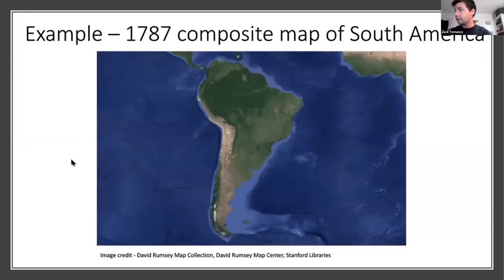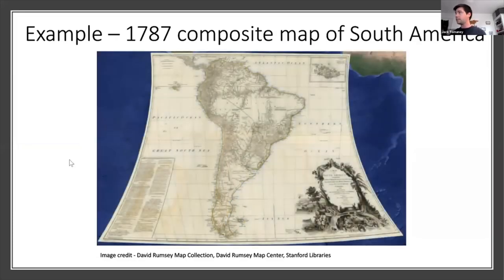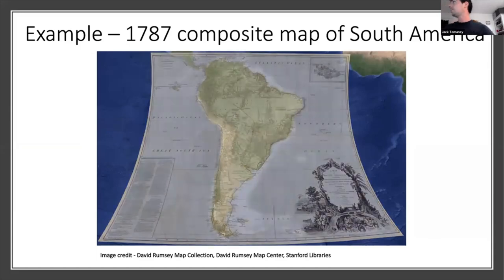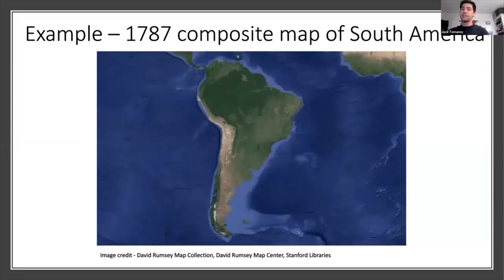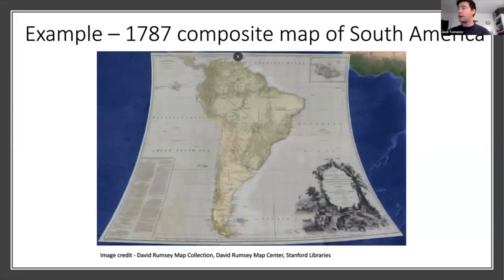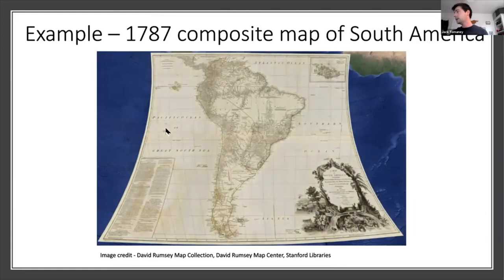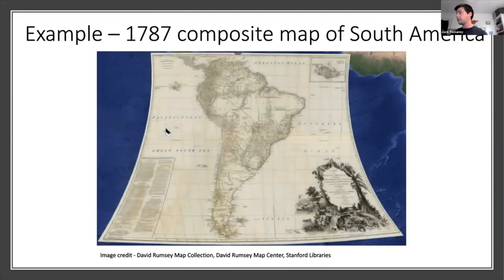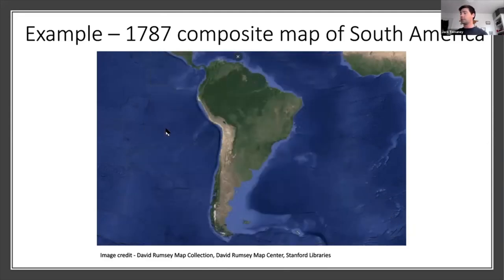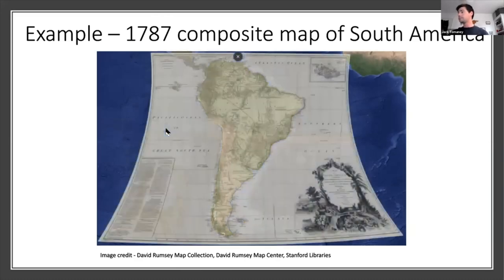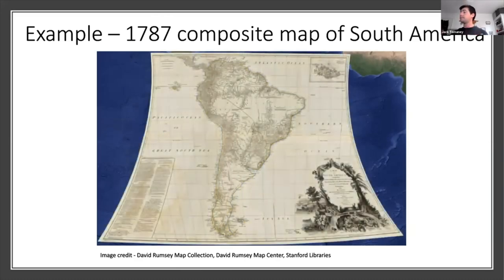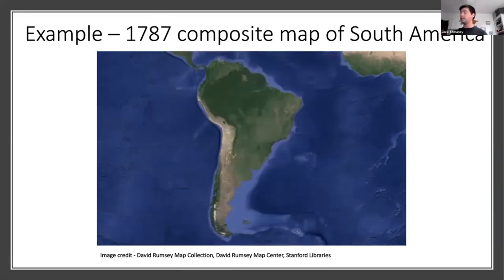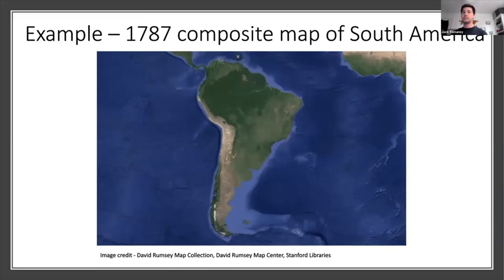You can georeference even larger areas. This is a composite map of South America from 1718, georeferenced over a Google satellite image. There are lots of areas missing from the map that the cartographer didn't know about, and you can see the map has been bent out of shape to fit its actual location.